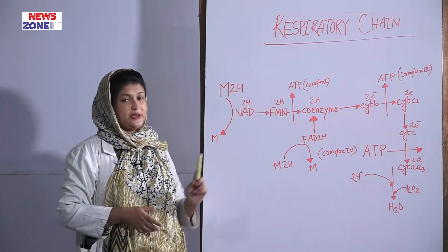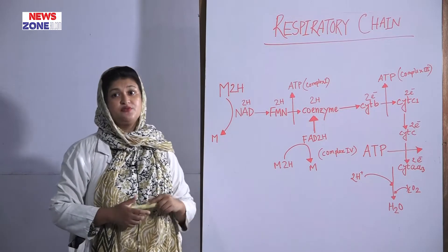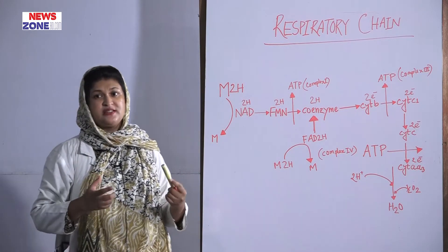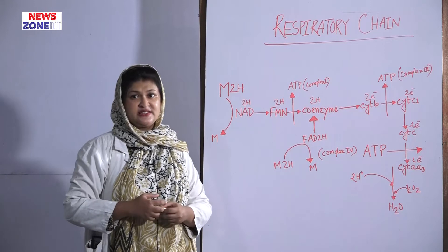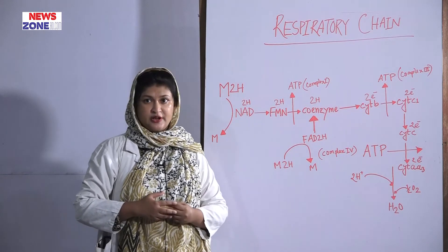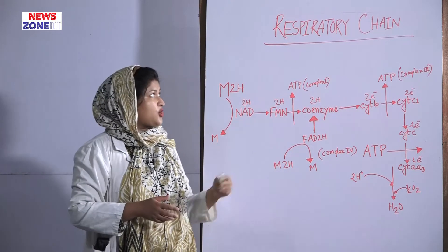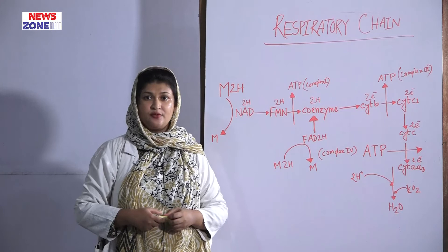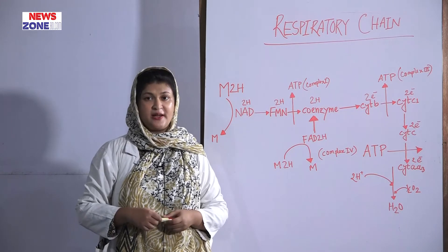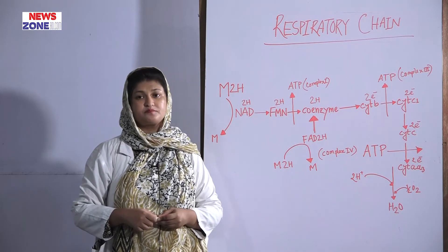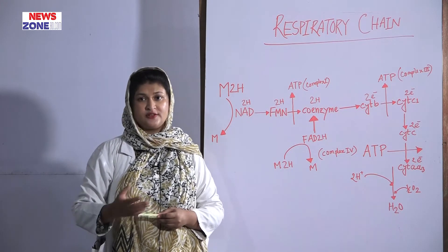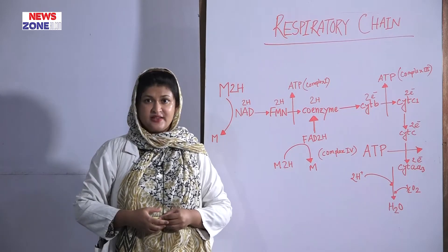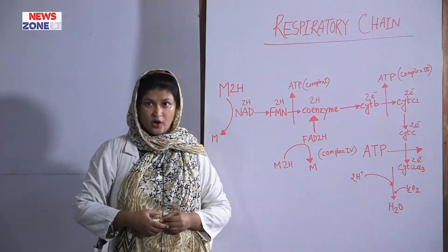The respiratory chain is very important because it produces ATP, which is the main energy currency of our body. This is all about the respiratory chain. Today I will finish my lecture; another day I will start another topic. Allah Hafiz and thank you all.